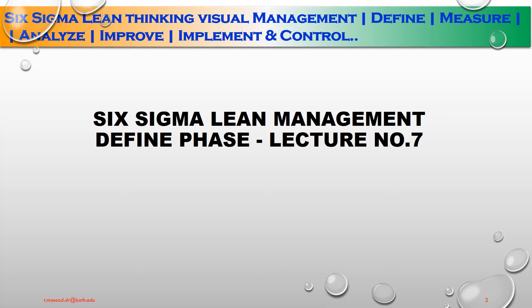Six Sigma Lean Management — Define Phase, Lecture Number Seven. Before we begin, let me give a recap of what we have discussed so far. Lectures one and two covered Six Sigma methods, Six Sigma principles, Lean and DMAIC — the difference between lean management and DMAIC: Define, Measure, Analyze, Improve, and Control. Lectures three and four covered history of Six Sigma, Six Sigma strategy, problem-solving strategy, and voice of the customer. Lectures five and six covered DMAIC — Define Opportunities, Measure Performance, Analyze Opportunities, Improve Performance, and Control Mechanisms.